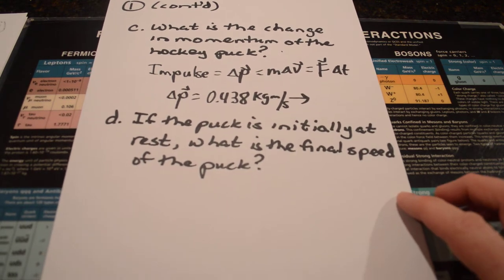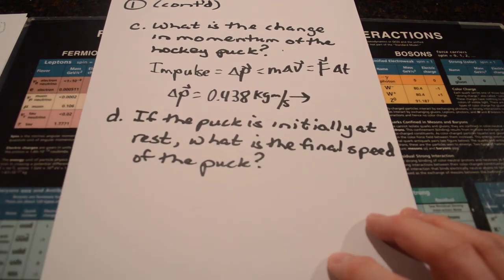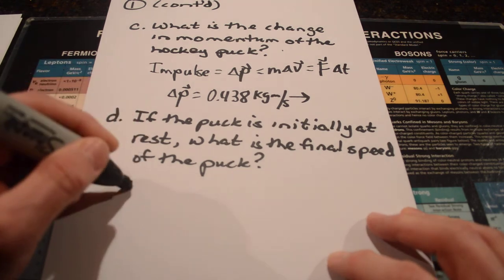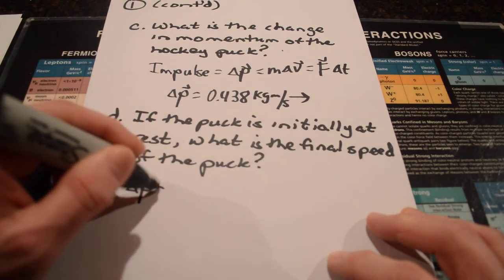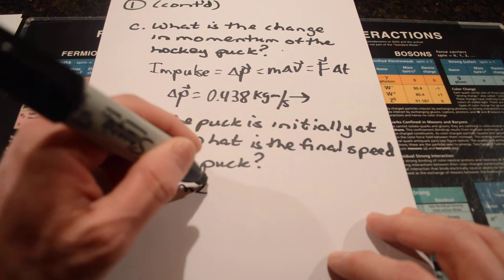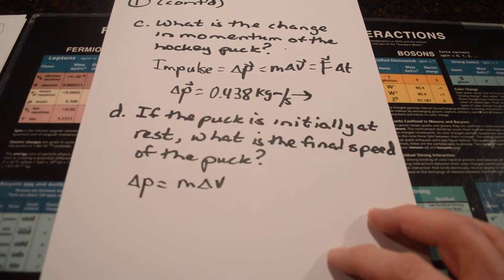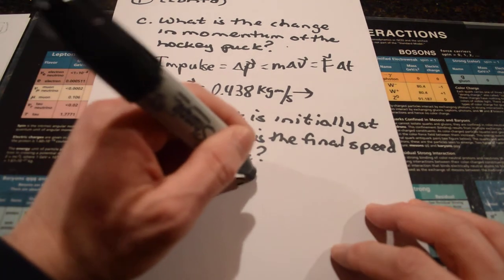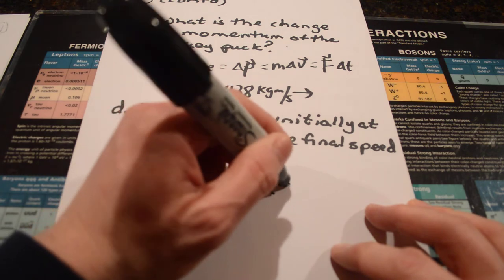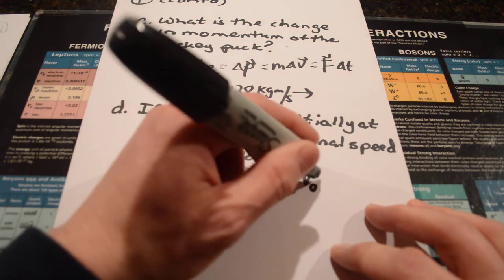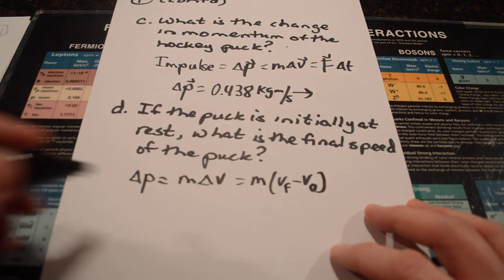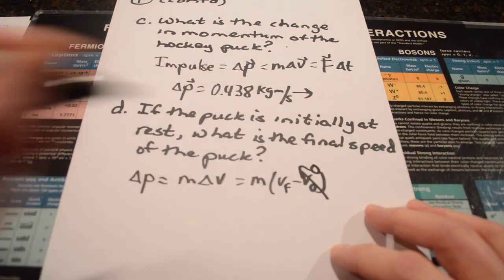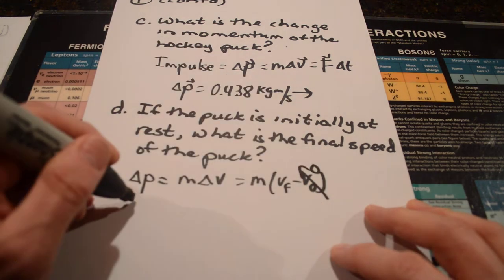And then the last question says, if the puck is initially at rest, what is the final speed of the puck? Well, the change in momentum is equal to, as we said above, mass times the change in velocity, which would be the mass multiplied by the final velocity minus the initial velocity. The initial velocity being zero, so the first term drops out.